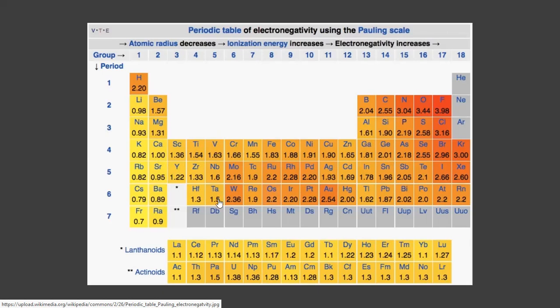As we go down the group, the effective nuclear charge is relatively less. The atomic size is increasing, and so it's difficult for that nucleus to pull the electrons.